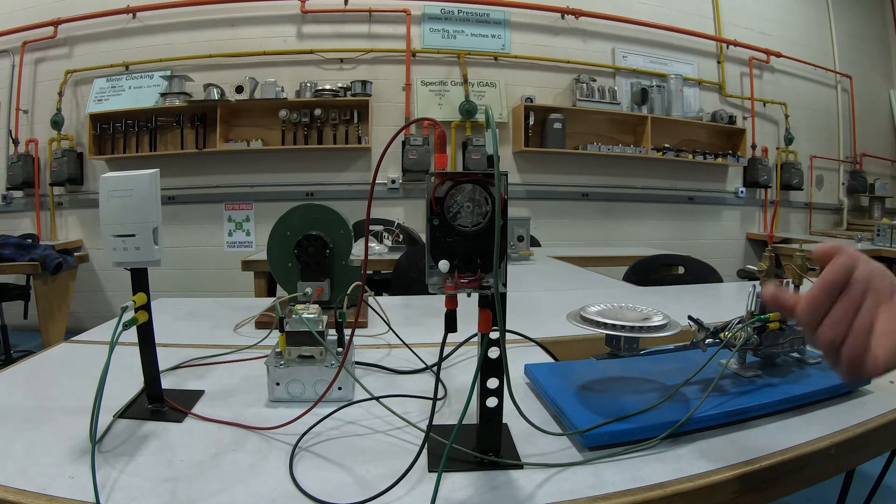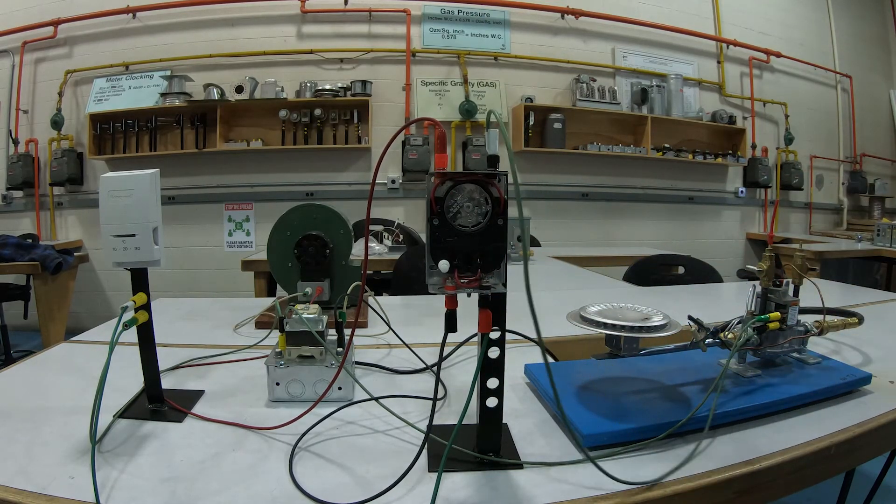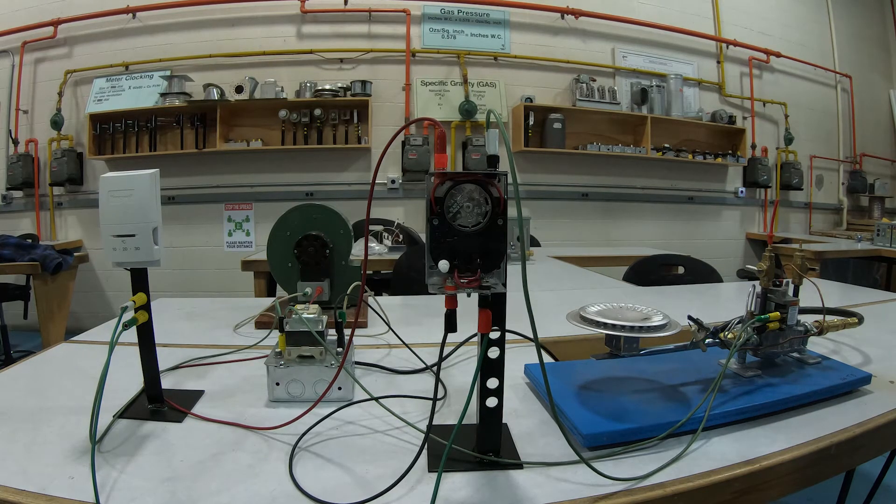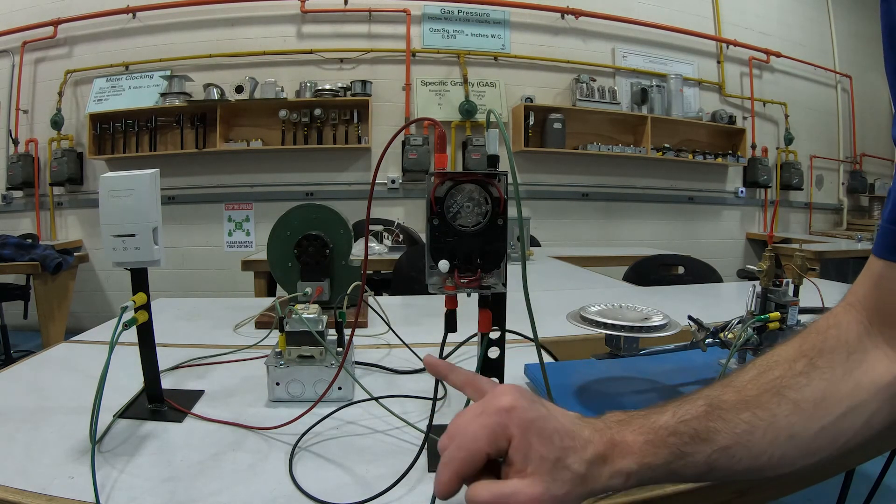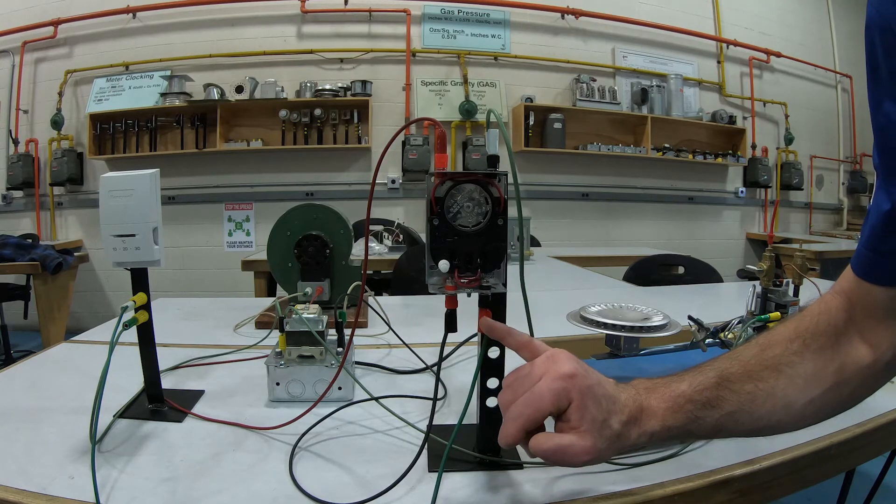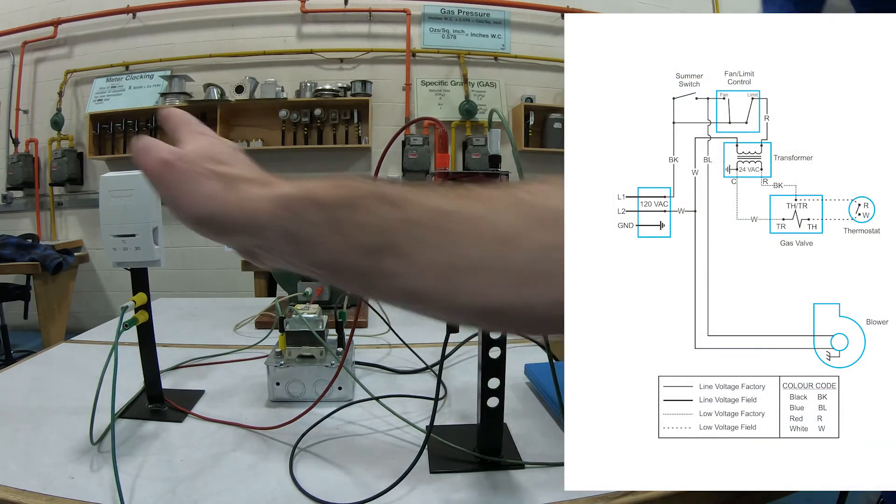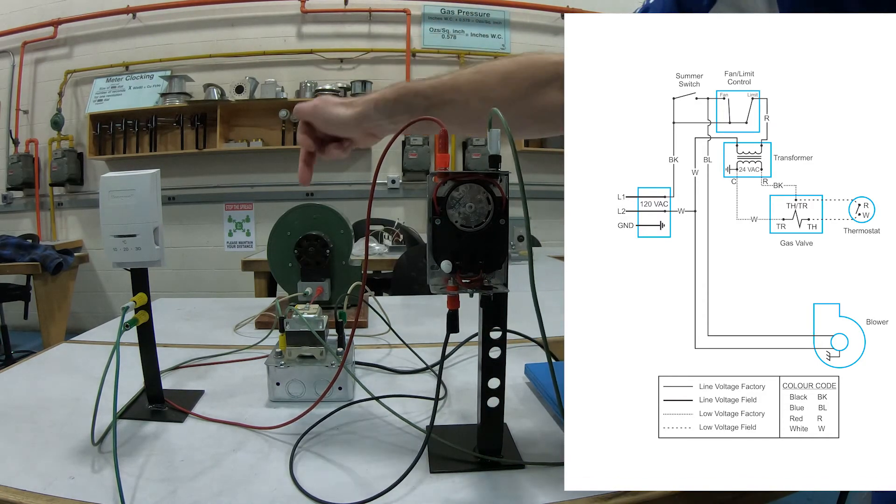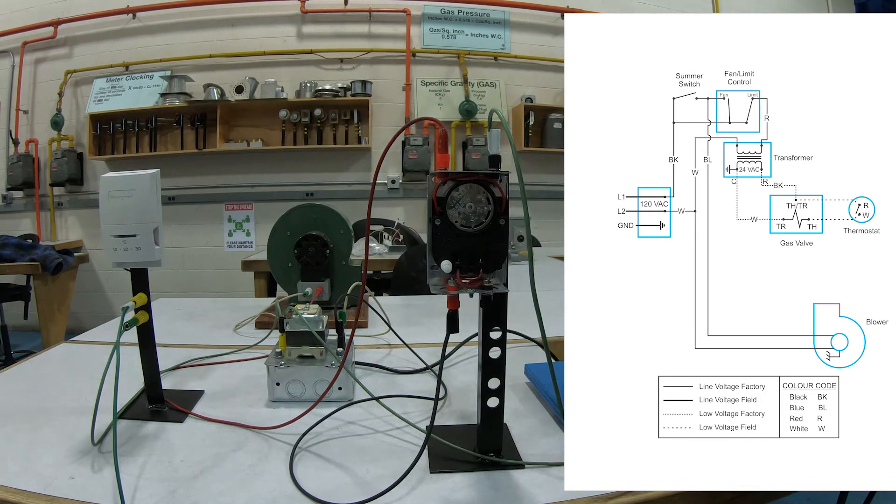So what happens here is when this gets too hot, it interrupts the electricity going to the gas valve, so it shuts off. The other way it could be wired is I could actually have 120 volts going right here, so this would be nothing to do with the thermostat whatsoever. 120 volts comes into here and it goes off to power that transformer. I'm not going to wire that up for you, but that is the other way.